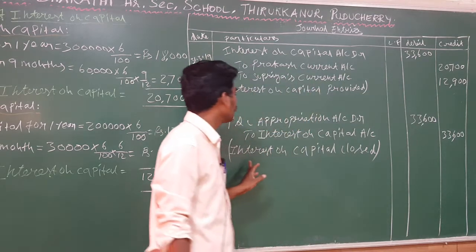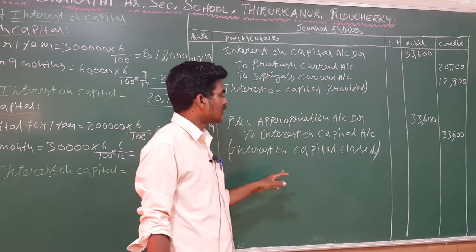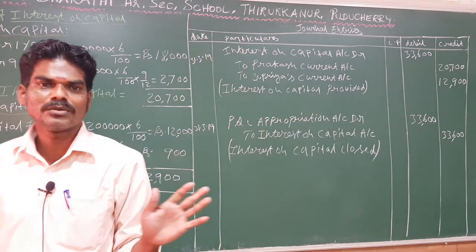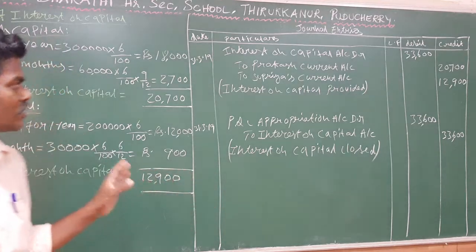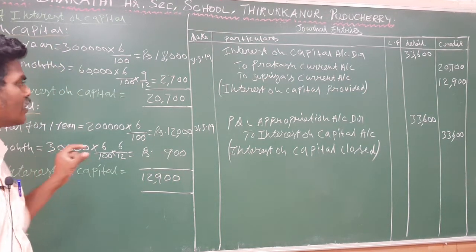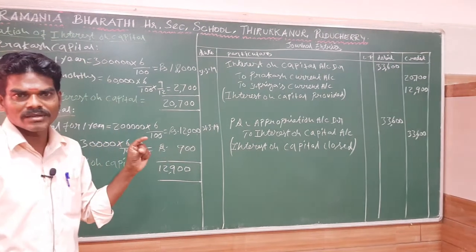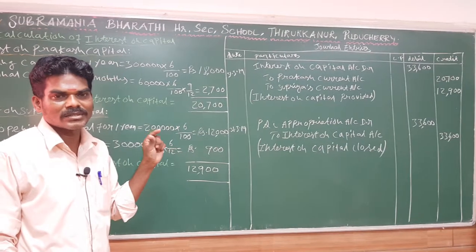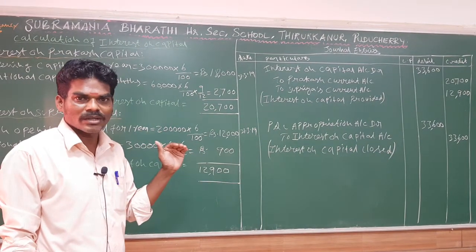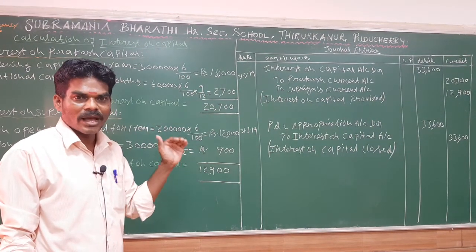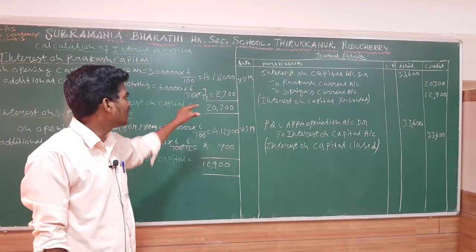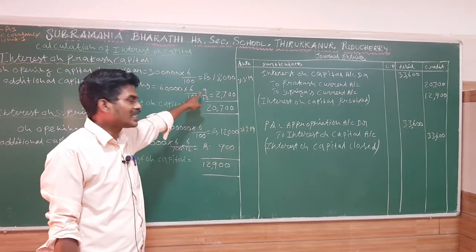Now we have the interest on capital closed. This is simple — for two marks or three marks. This is the first part. If a partner has additional capital, you will see how the interest on capital is calculated.